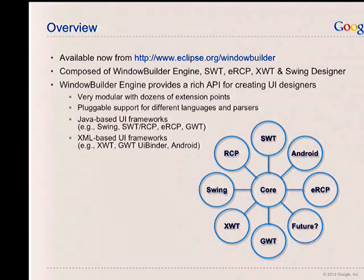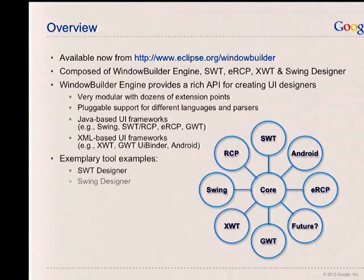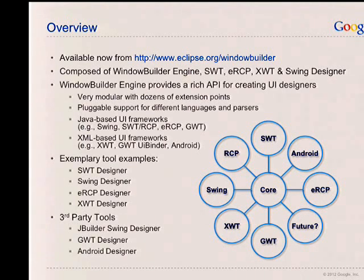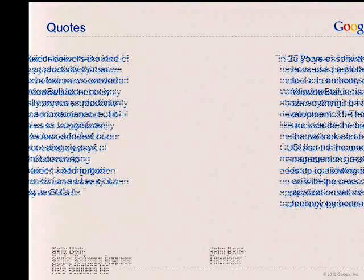It supports a number of Java-based UI frameworks such as Swing, SWT, RCP, ERCP, and GWT, and XML-based frameworks like XWT, GWT UI Binder. There's even a third-party Android designer built on top of the Window Builder technology. At Eclipse.org we have exemplary tool examples: SWT Designer, Swing Designer, ERCP Designer, and XWT Designer. And there are some third-party tools built on top of it, such as JBuilder Swing Designer, GWT Designer from Google, and the Android Designer — I'll provide a link to it later.